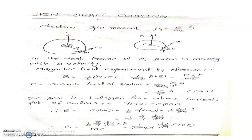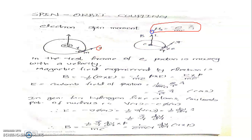Now let's see spin-orbit coupling. In the case of this kind of species, we can visualize the system consisting of an electron circulating around the nucleus having a charge Ze, with an instantaneous velocity v. Along with this revolutionary motion, this electron is also spinning around its own axis. This eventually creates a magnetic moment for the electron, given by the expression μ_s = −e/(mc) · S, where S is a vector representing the spin angular momentum, having eigenvalue plus or minus ℏ/2.